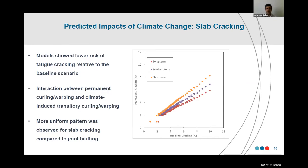We also looked at slab cracking, and we noticed that slab cracking is probably going to be reduced a little bit in light of climate change, because the interaction between permanent curling and warping — related to zero stress temperature — and climate-induced curling and warping resulted in slightly less slab cracking under all these scenarios.